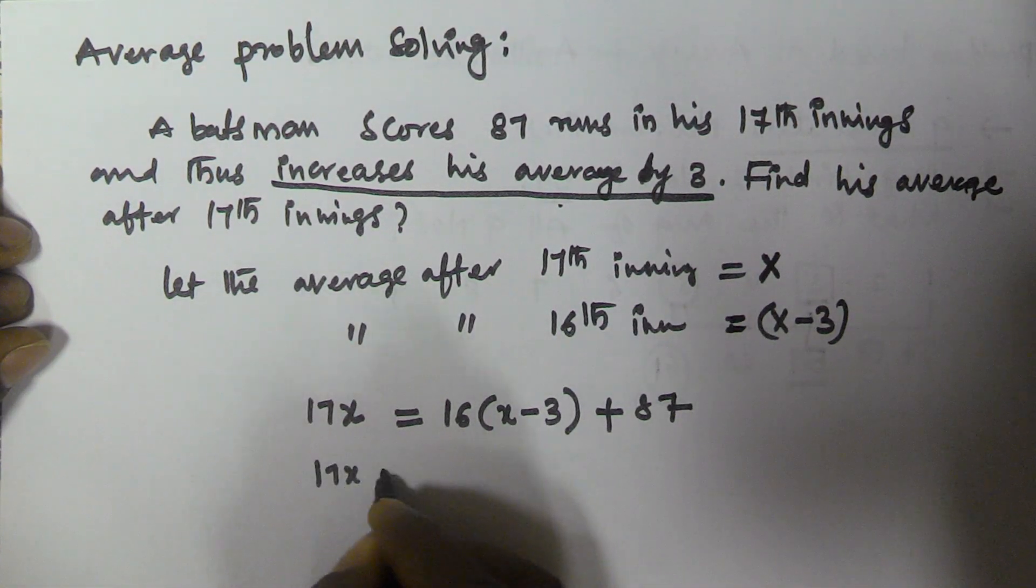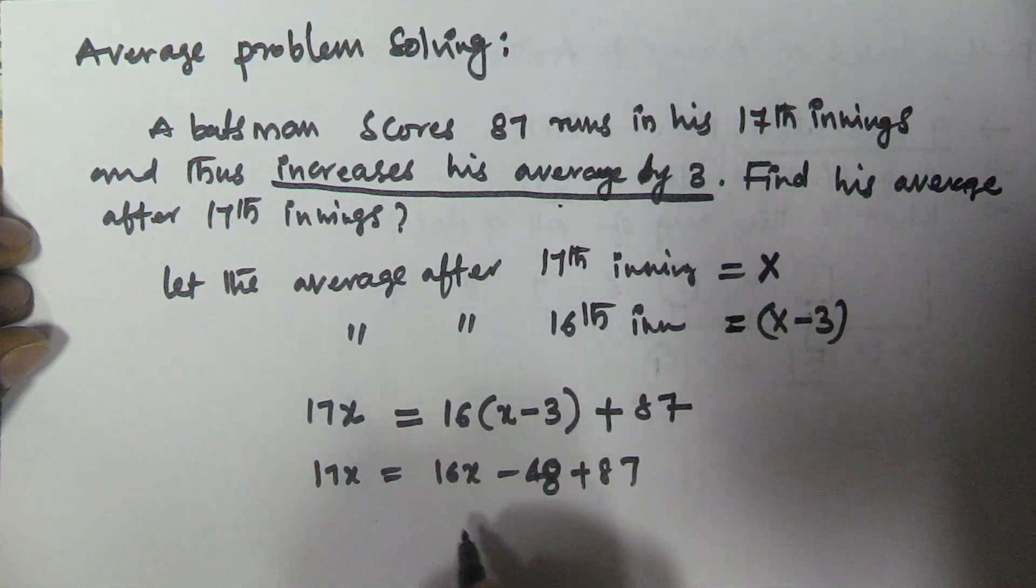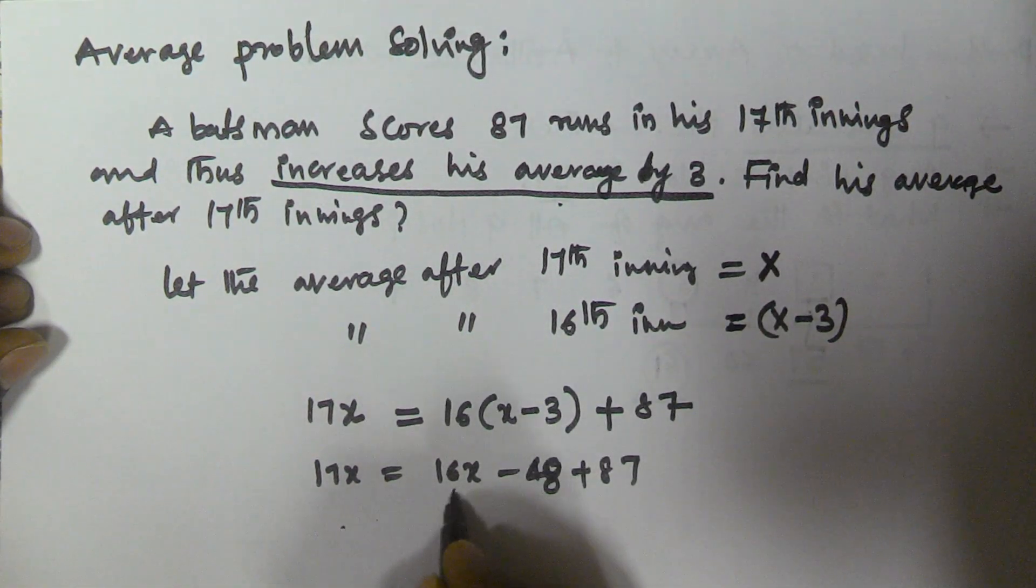Now we solve this. 17x equals 16x minus 48 plus 87. So x equals 39.